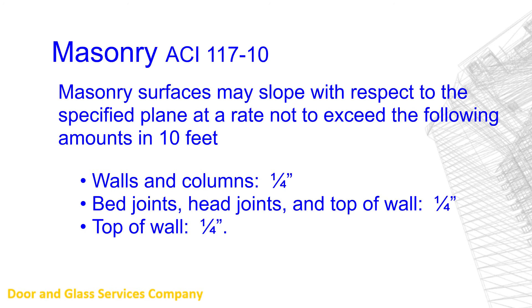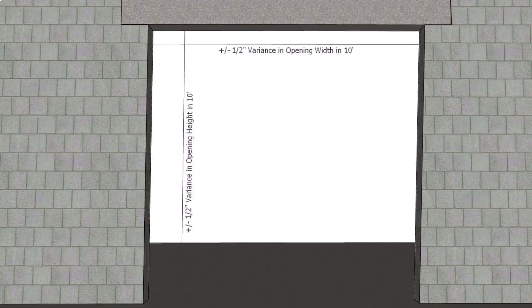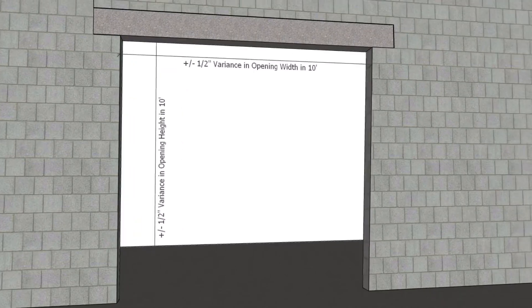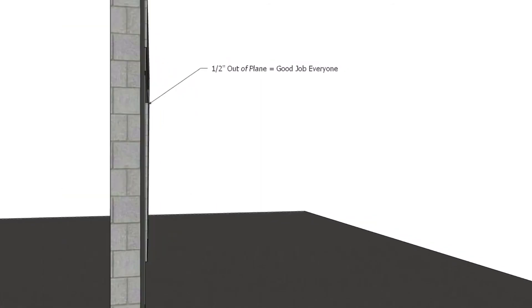The American Concrete Institute identifies allowable tolerances for masonry in their standard ACI-117. This standard identifies that masonry surfaces may slope with respect to a specified plane at a rate of 1/4 inch in 10 feet. This applies to walls and columns and their horizontal boundaries. It has the effect that openings may vary in size by as much as a half an inch and that openings may be warped by as much as a half an inch in 10 feet.